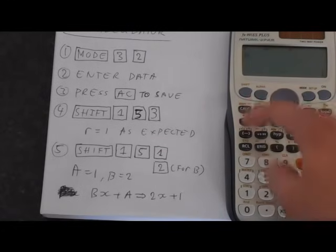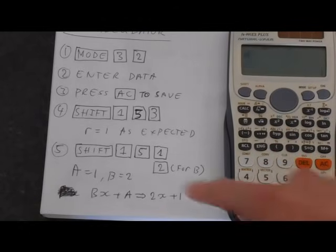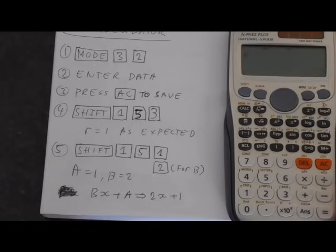Same thing for B. Shift, 1, 5 for the regression menu, and then we want B, which is 2, and then equals, we get 2.